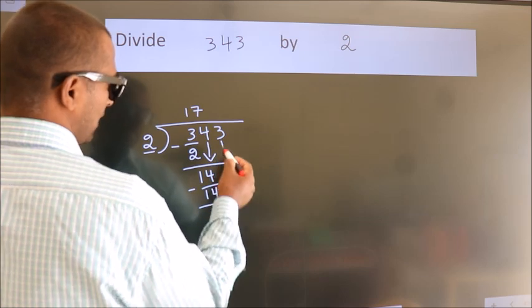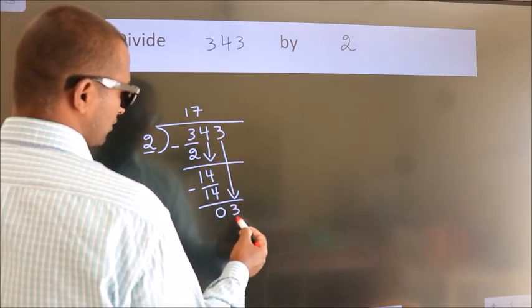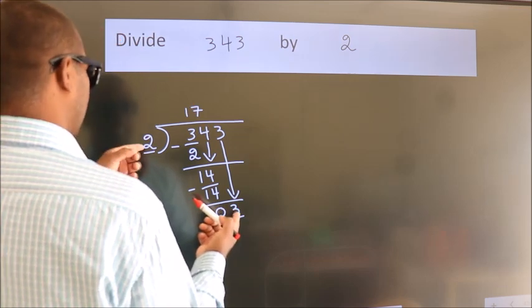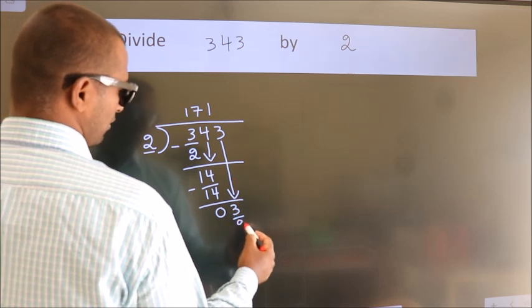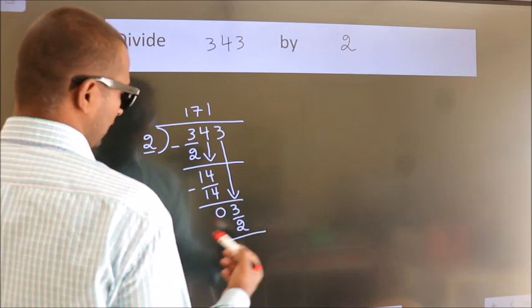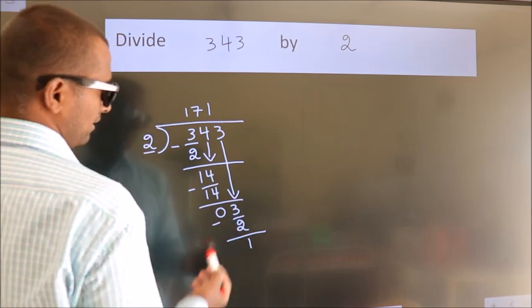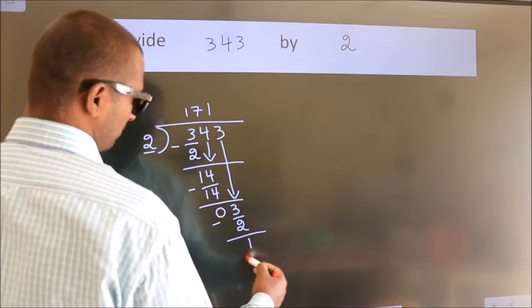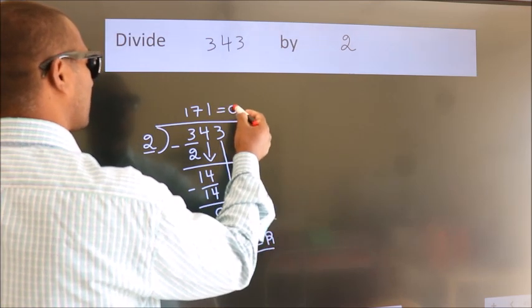After this, bring down the beside number. So 3 down. So 3. A number close to 3 in the 2 table is 2 times 1, which is 2. Now we subtract. We get 1. No more numbers to bring down, so we stop here. This is our remainder. This is our quotient.